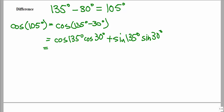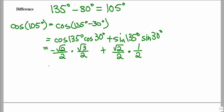Cosine of 135 is in quadrant 2, the 45-degree angle family, so that's negative square root of 2 over 2, times cosine of 30 which is square root of 3 over 2, plus sine of 135 — sine is positive in quadrant 2 — so that's square root of 2 over 2, times sine of 30 degrees which is 1/2. We multiply across the two fractions, very similar to what we just did for the sum, and then combine into the same denominator.